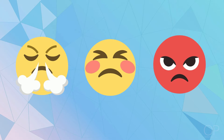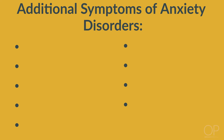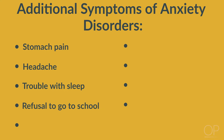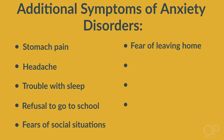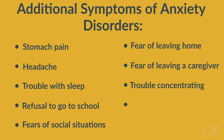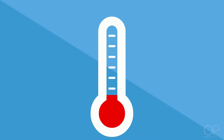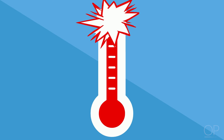Irritability, explosiveness, and anger are behaviors to ask about as they can be the predominant display of anxiety in children. Other symptoms to ask about include physical complaints such as a stomach ache or headache, trouble with sleep, refusal to go to school, fears of social situations, leaving home, leaving a caregiver, trouble concentrating, or a decrease in school performance. A thorough evaluation will also include establishing a timeline of these symptoms and asking about their severity. Just like pain can be rated on a numeric scale, so can mood symptoms — you can ask the child to rate their current anxiety symptoms on a scale of 0 to 10.